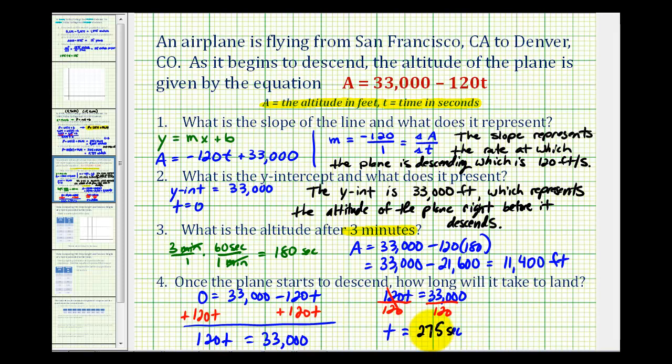If we want to convert this to minutes, since there are 60 seconds in every minute, and 60 times four is 240, this would be equal to four minutes and 35 seconds. Again, six times four would be 240 seconds, leaving us with an extra 35 seconds.